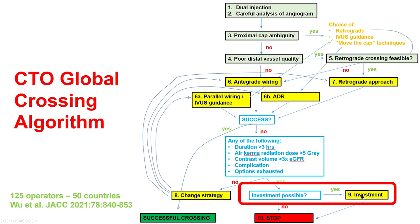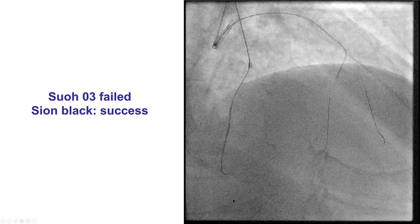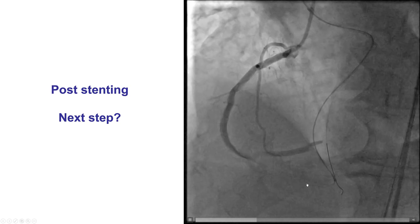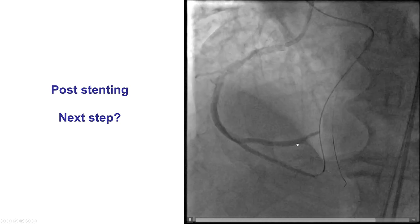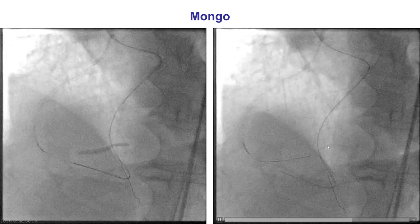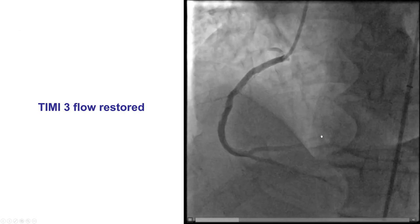Step nine is the so-called investment procedure. If things are not going well and the operator is ready to stop, one can perform an investment procedure — typically the STAR technique, advancing a knuckle wire distally until it re-enters, and sometimes ballooning in the extraplaque space. Ideally, some antegrade flow is restored and the patient is brought back in two months for another recanalization attempt, which is often successful. An example is shown of a CTO where retrograde crossing with guide wires and stenting of the RCA restored flow in the PDA, but a large posterolateral branch remained unperfused due to extraplaque position. The Gladius Mongo wire was used to fenestrate the hematoma, restoring TIMI flow into the right posterolateral — a form of the STAR technique.